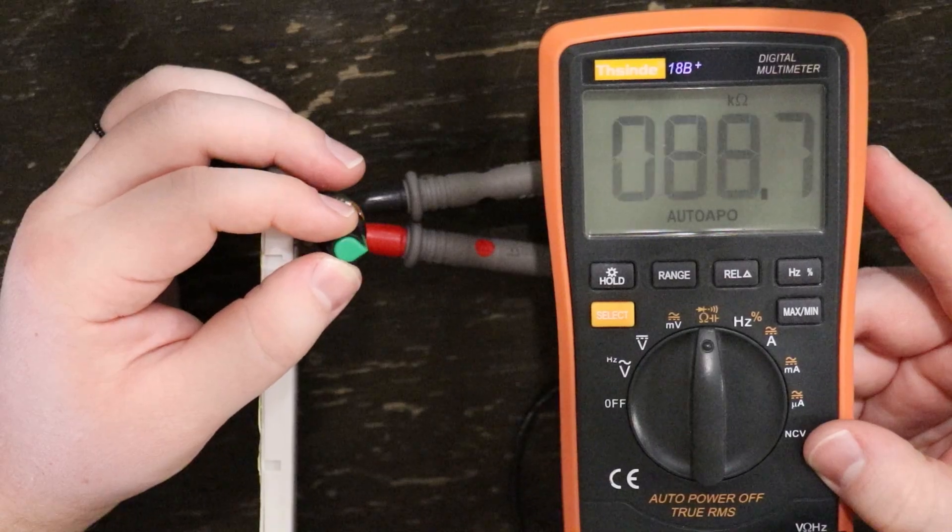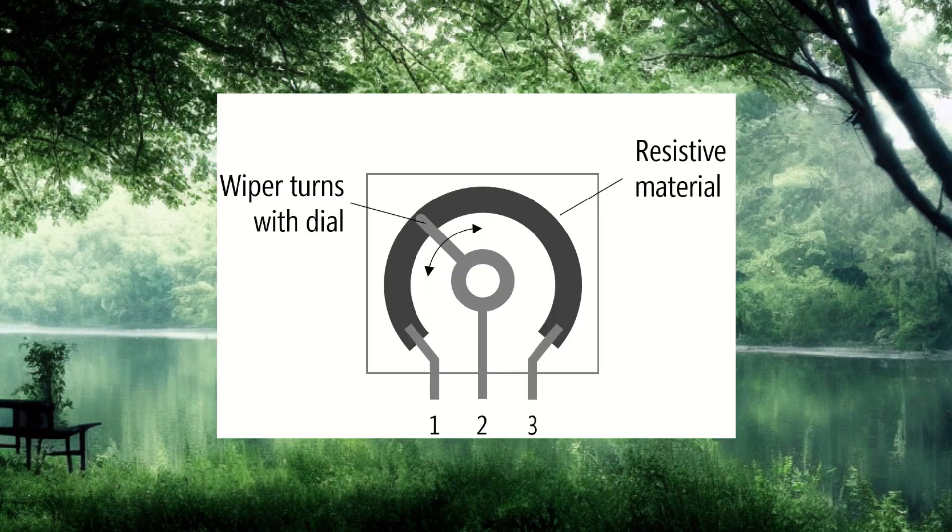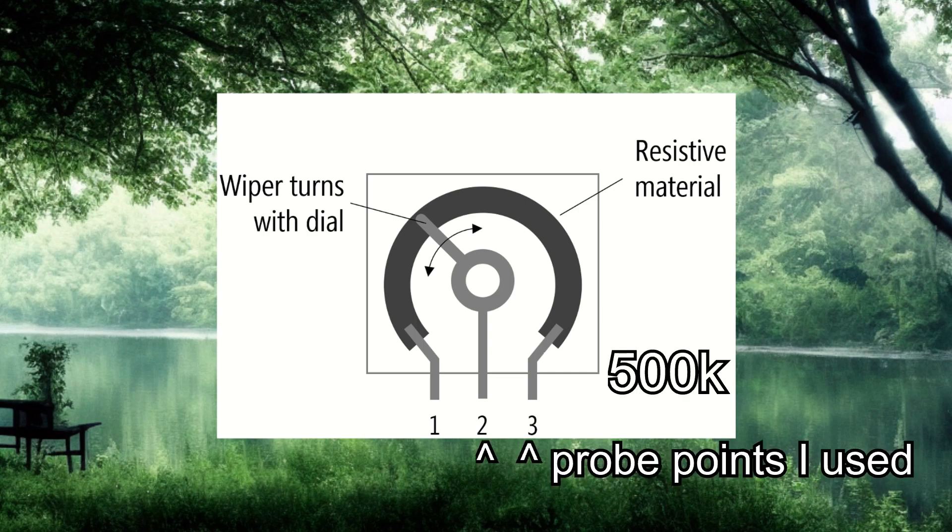If you recall how a potentiometer works, there are three pins. Pins 1 and 3 have the maximum resistance listed, which in my case is 500 kilo-ohms. In the middle there's a wiper that rotates along to increase or decrease the resistance.